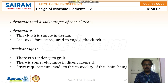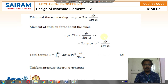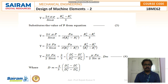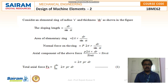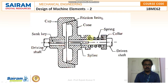The advantages of the cone clutch are that it is very simple in design and requires less axial force to engage. The disadvantages are a tendency to grab, some reluctance in disengagement, and strict coaxiality requirements for the connected shafts. The derivation for torque transmitted by the cone clutch will be discussed in the upcoming video, as we don't have time to cover it in this video. Thank you.